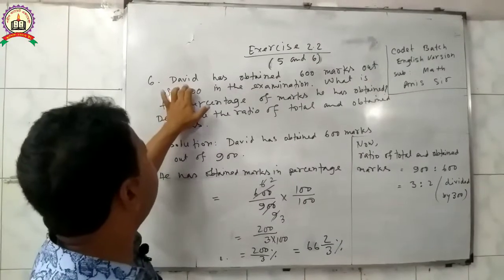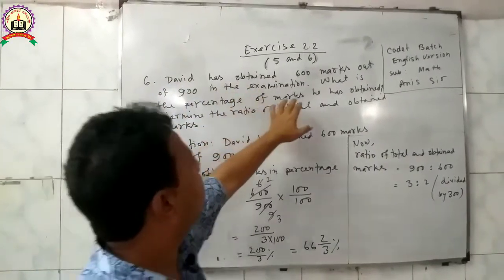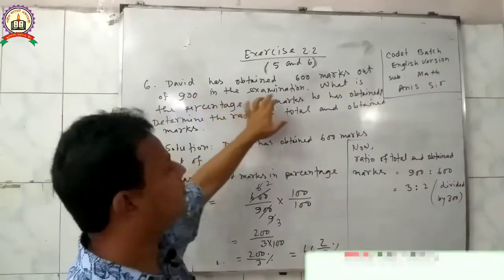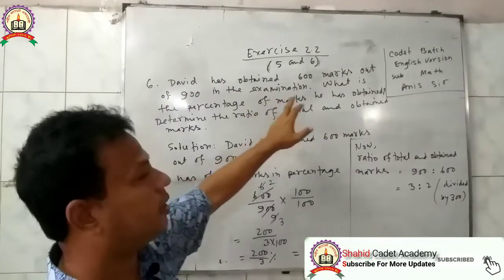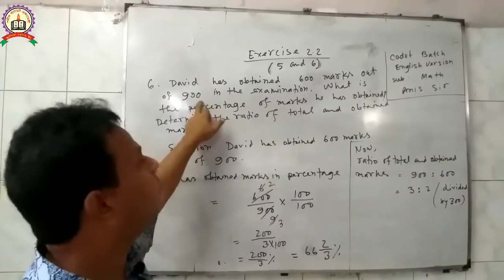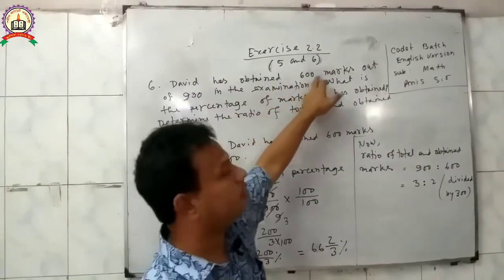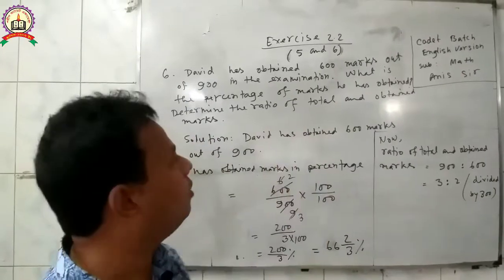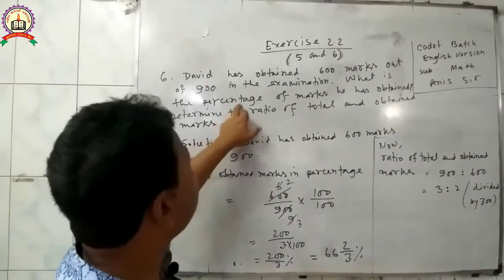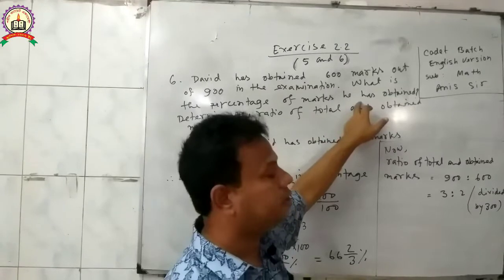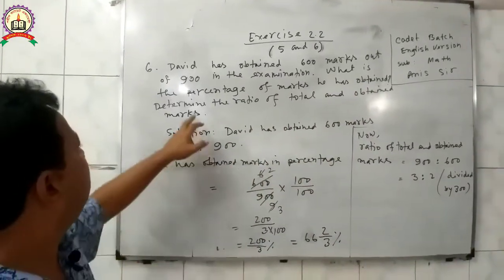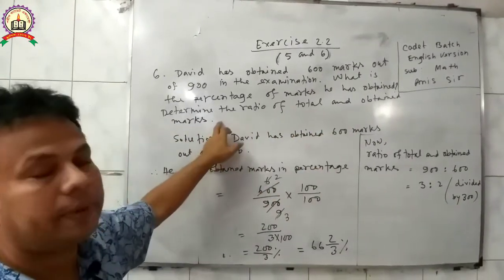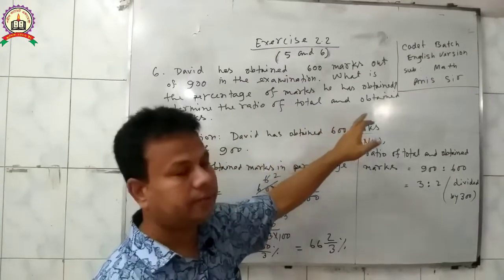Question: David has obtained 600 marks out of 900 in the examination. There are two parts. First part: what is the percentage of marks he has obtained? Second part: determine the ratio of total and obtained marks.